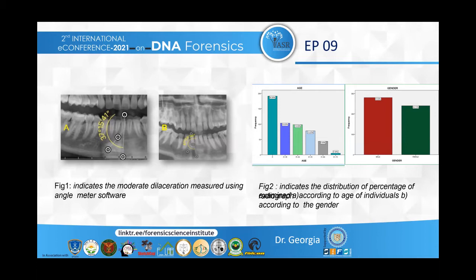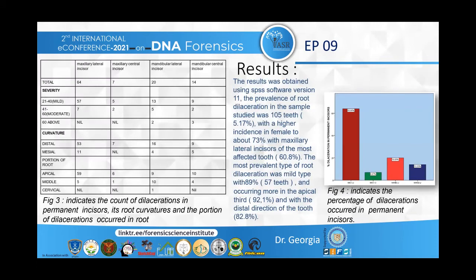Figure one indicates the angulation measured using the angle meter software. In figure two, this is the demographic data for the retrieved OPGs. I segregated the data according to age groups: 0 to 20 years, 20 to 30, 20 to 40, 40 to 50, 51 to 60, and 61 to 70. About 53% were male cases and 46% were female cases.